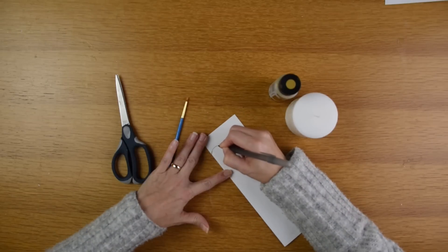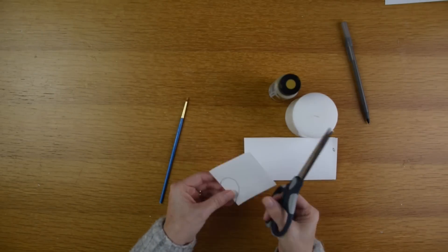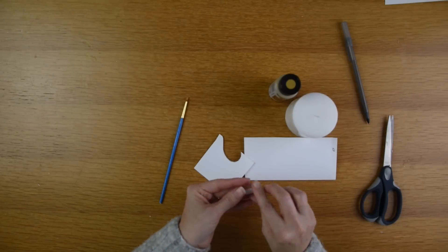So my piece of paper is folded in half and I'm going to go ahead and draw a heart, a half of a heart, onto the paper. And then I'm going to use my scissors and cut that shape out to make a complete heart.